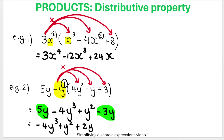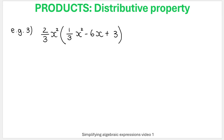The negative 4Y cubed has no like terms, so it stays. The positive Y squared has no like terms. Then we combine 5Y and negative 3Y to get 2Y.